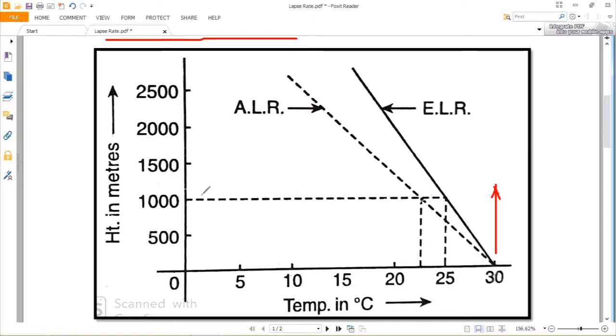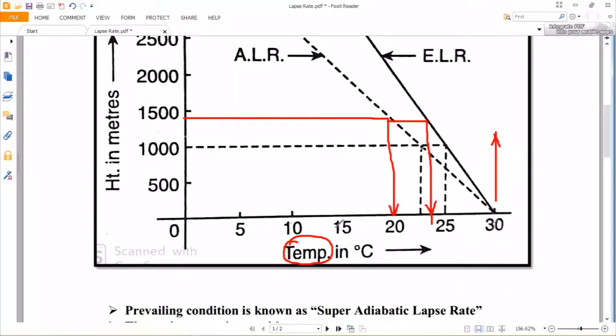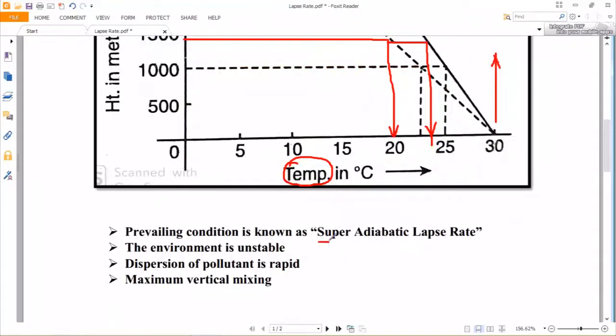The reverse is also true, and hence a descending parcel of heavier air will always remain cooler than the surrounding air because as we move down, the environment is getting warmer more quickly than the parcel of air. The prevailing environmental lapse rate (ELR) in such a condition is known as super adiabatic lapse rate because it is more than the adiabatic lapse rate.